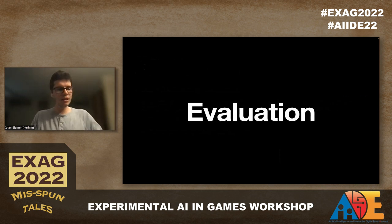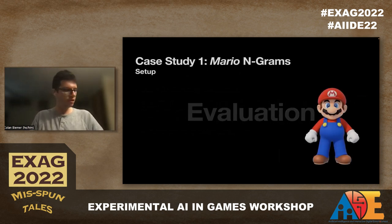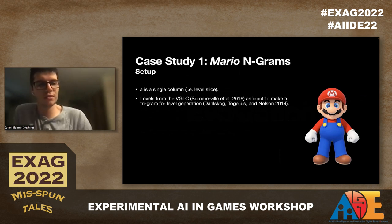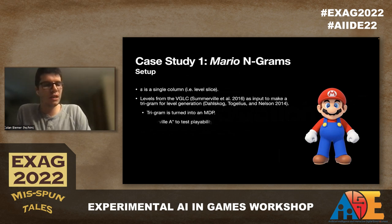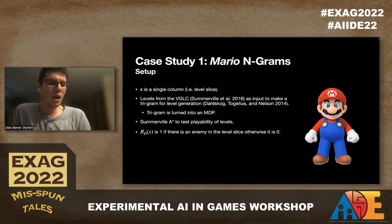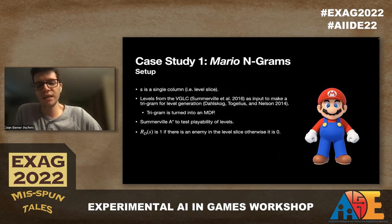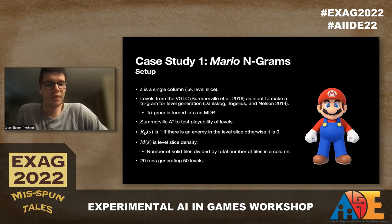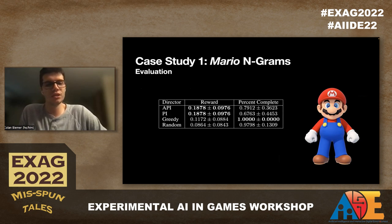For our evaluation, we did two case studies. For Mario, we used n-grams where S is a single column or level slice. We used levels from the BGLC to create a trigram, which is turned into an MDP. We used Somerville's A-star agent to test playability. The designer reward table is initialized based on whether there's an enemy in the level slice, M of S is the level slice density, and we ran 20 times generating 50 levels each time.